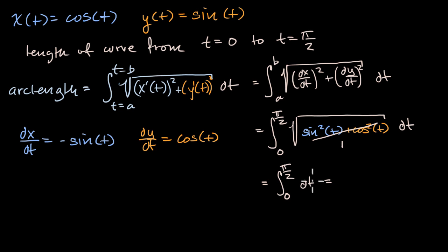Well, this is going to be equal to, you could view this as a one here, the antiderivative of one with respect to t is just going to be t. We're going to evaluate that from pi over two. We're going to evaluate that at pi over two and then subtract it evaluated at zero. So this is going to be equal to pi over two minus zero. That's going to be equal to pi over two. Now let's think about why that actually does make sense.